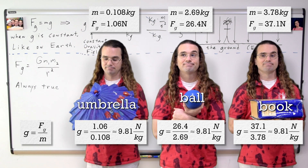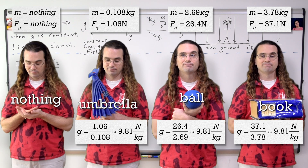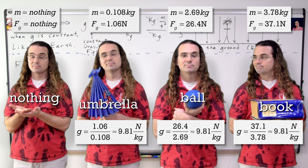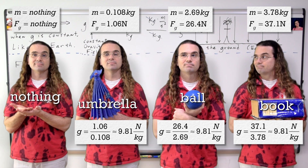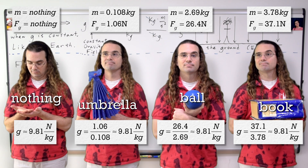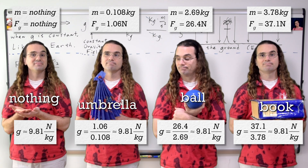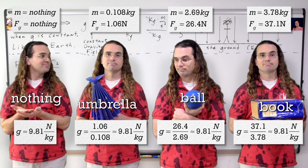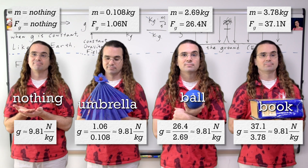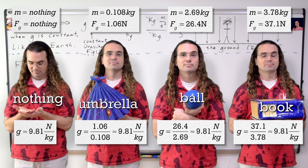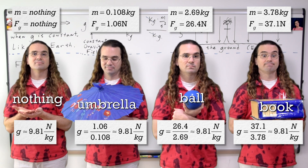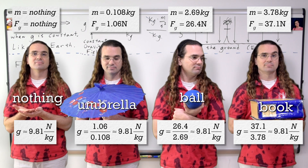But imagine if Mr. P were not holding anything. Even though there is no mass in that location, that region of space still contains a gravitational field with a value of 9.81 newtons per kilogram. We could put a mass there and it would result in a corresponding force of gravity acting on the object. That is what it means to have a gravitational field. The empty space contains the possibility of a force of gravity. All you need to add is a mass to experience the force of gravity.